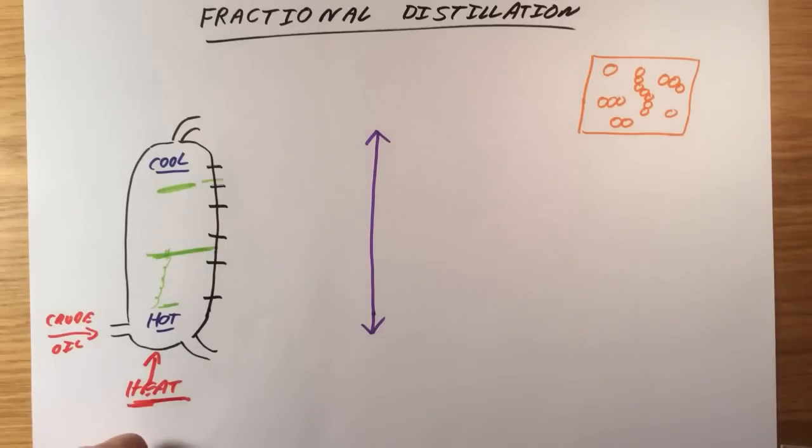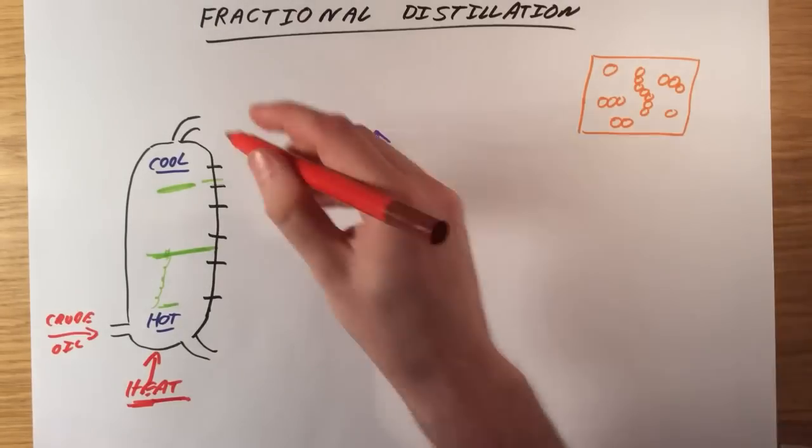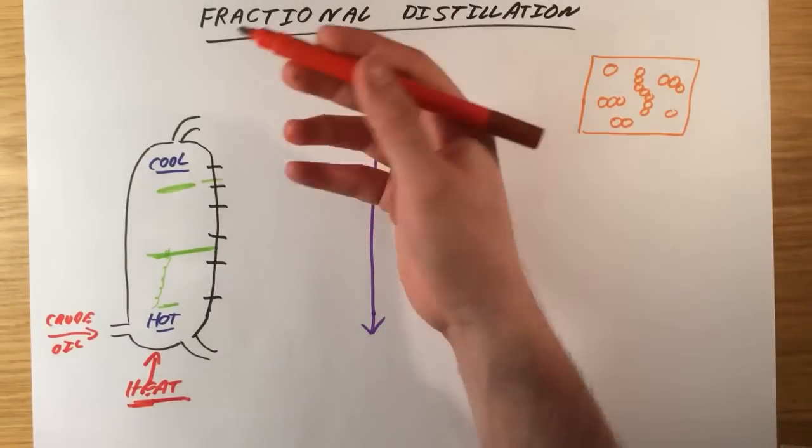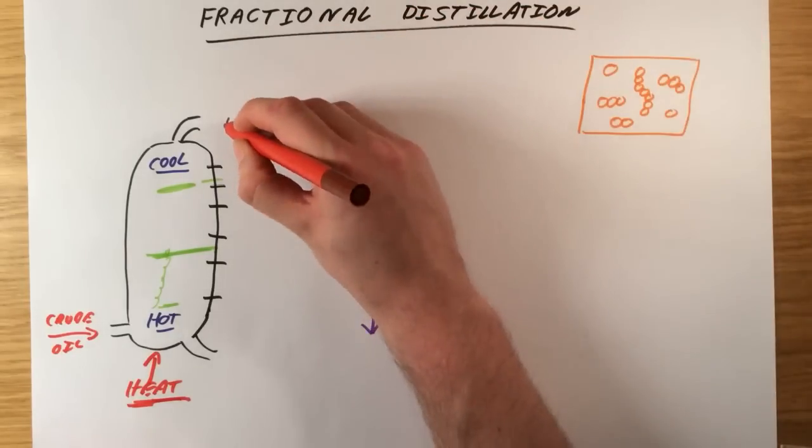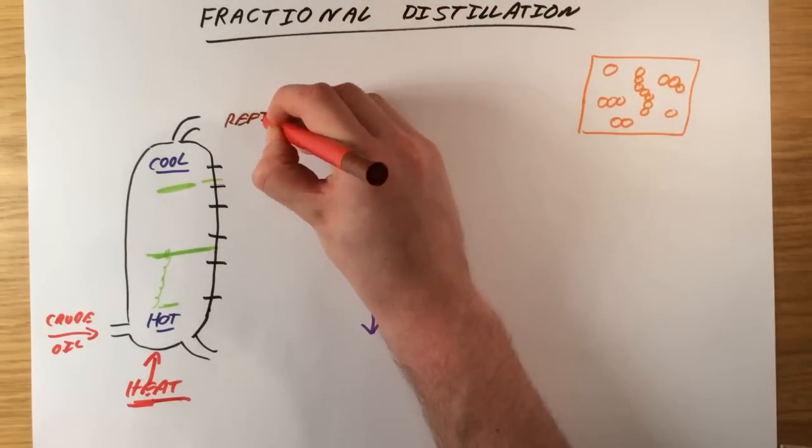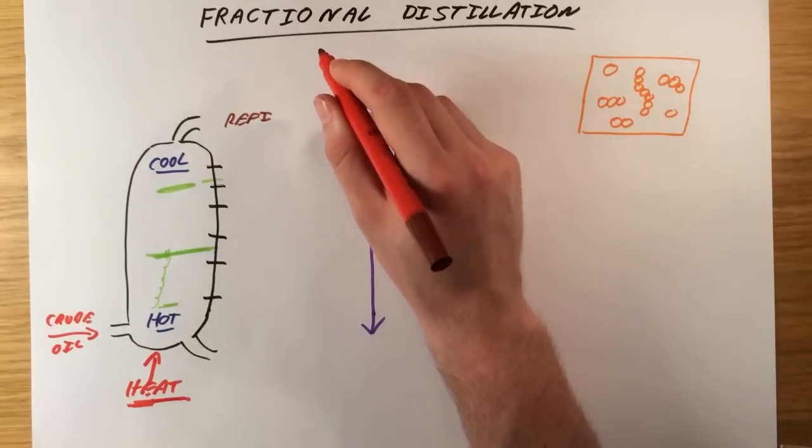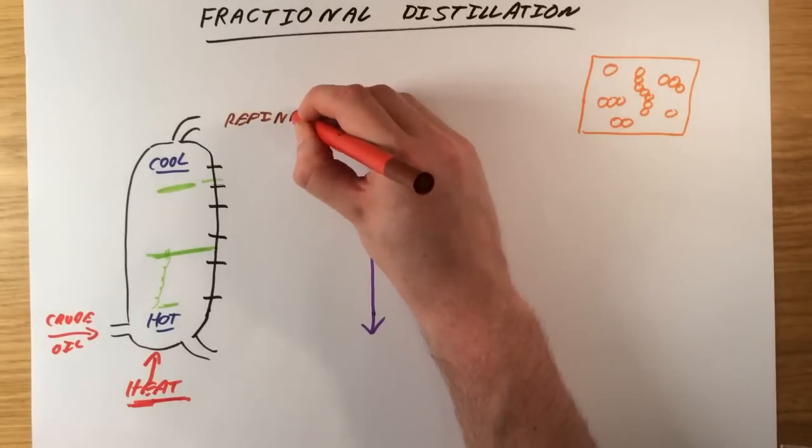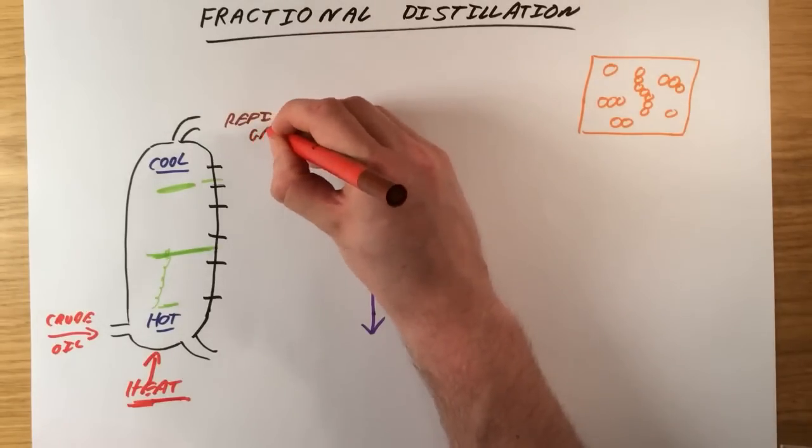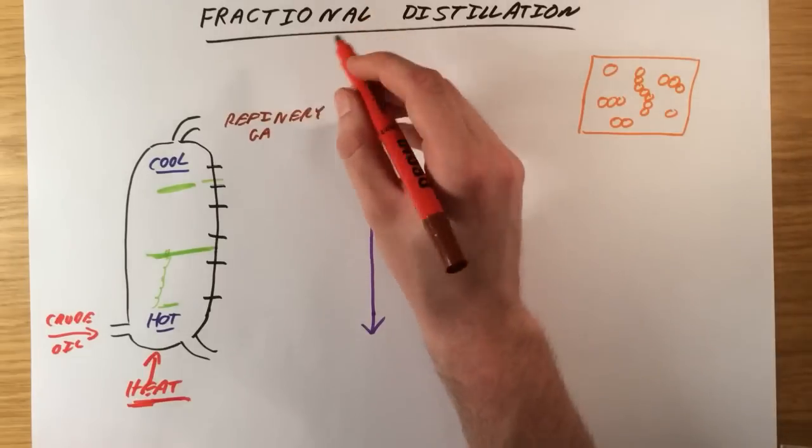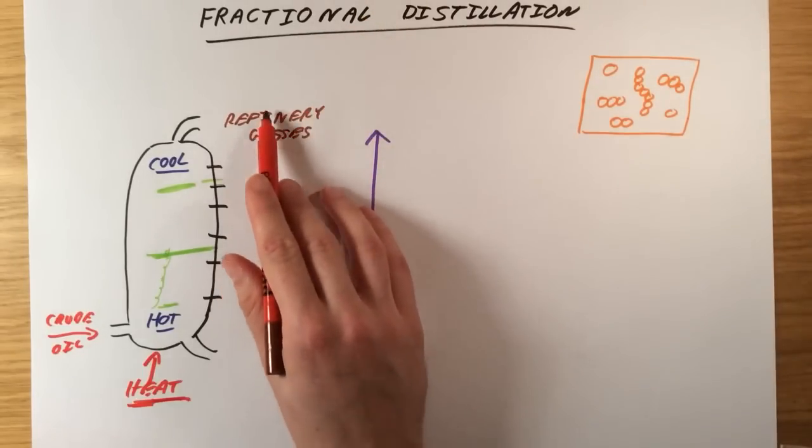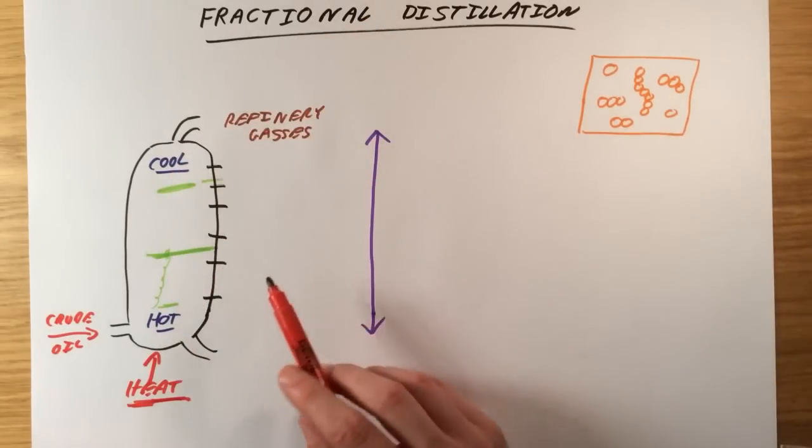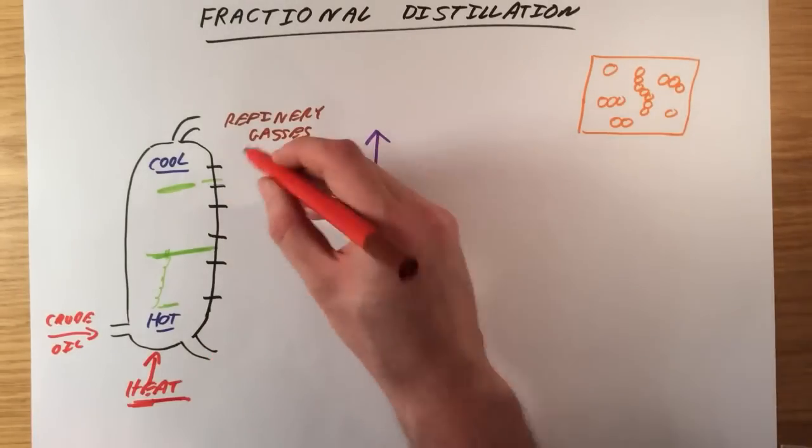And what we find is out of the top of the column, we get a fraction which don't condense at all. We call these refinery gases. So this is things like methane, ethane, propane, which we can bottle and use as fuels. So things like cal gas, camping gas, and those blue gas bottles is refinery gases from the fractional distillation of crude oil.